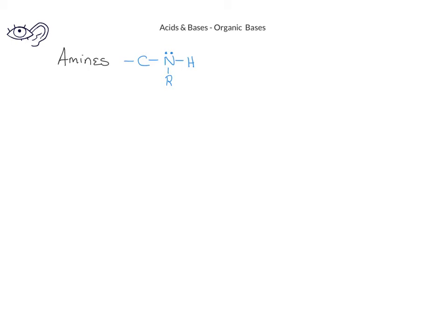We can use pKa as a measure of how basic compounds are as well. In general, the larger the pKa value, the more basic the compound is going to be. For amines, they will have pKa values in the range of about 40.